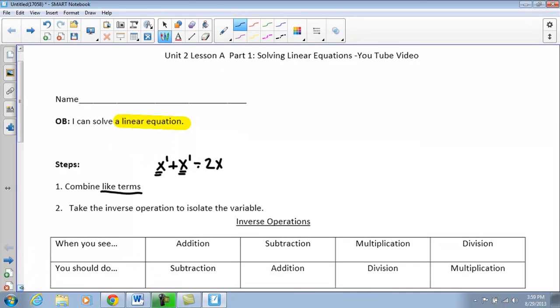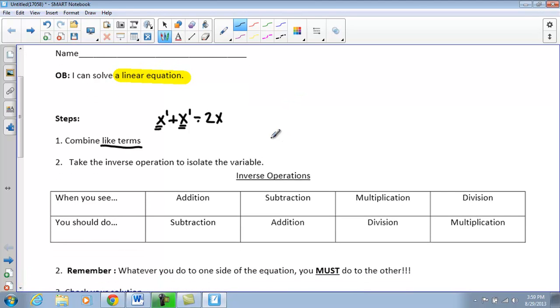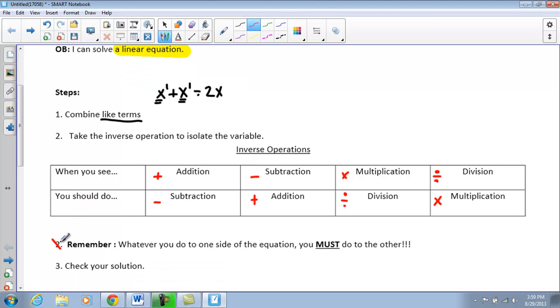The next thing we need to take a look at is remember, when you're solving equations, you're going to take the inverse operation to isolate the variable. So when you see addition, you are going to do subtraction. When you see subtraction, you are going to do addition. When you see multiplication, you should do division. And when you see division, you should do multiplication. One of the most important things here is to remember that whatever you do to one side of the equation, you must do to the other side.